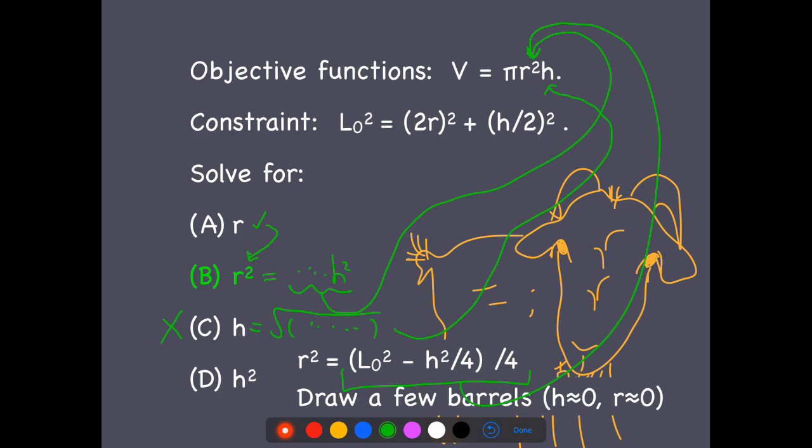So here's my advice again about doing some sketches. Now I drew those earlier. When h is equal to zero, you have a very long and thin barrel. In fact, it could be infinitely thin.